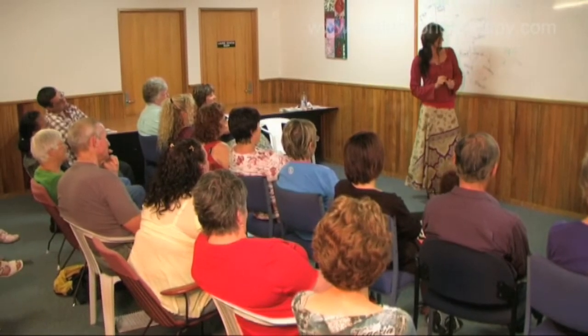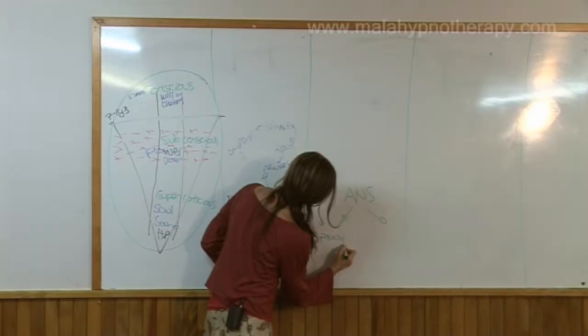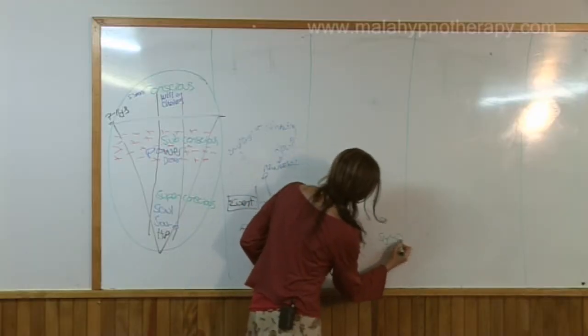So our autonomic nervous system splits up into two different parts. We have a parasympathetic nervous system and a sympathetic nervous system.